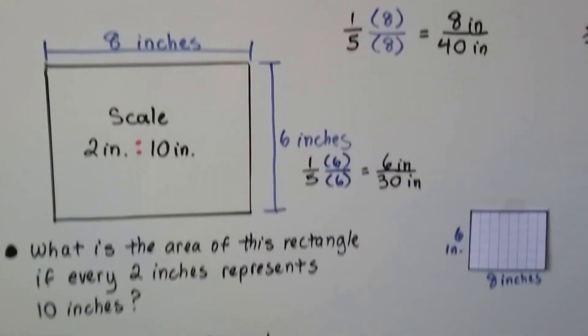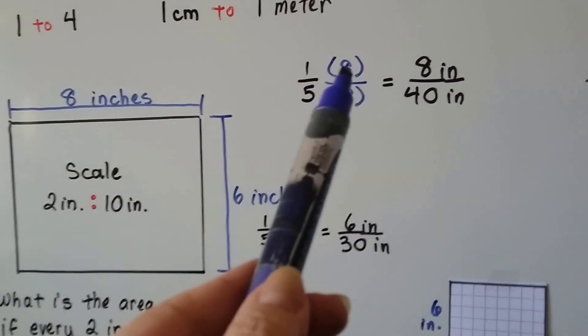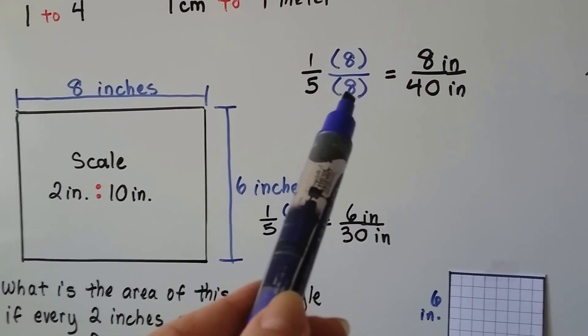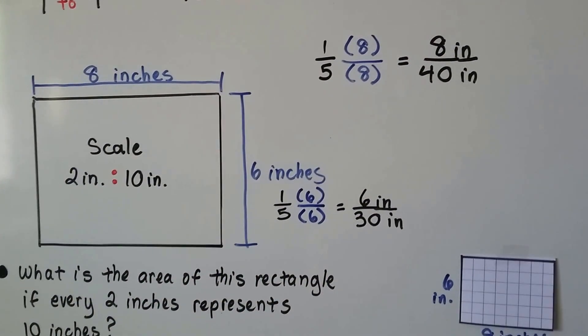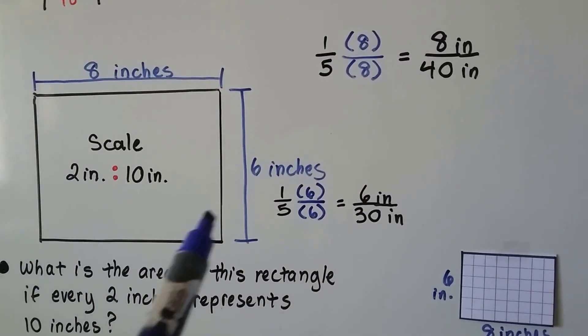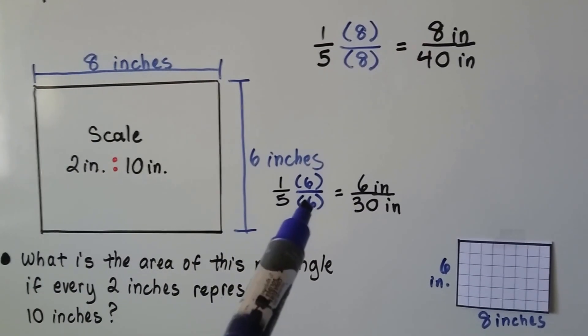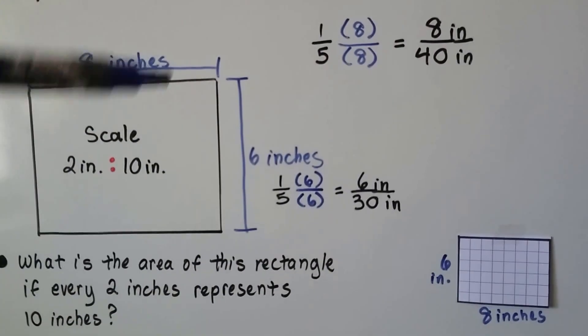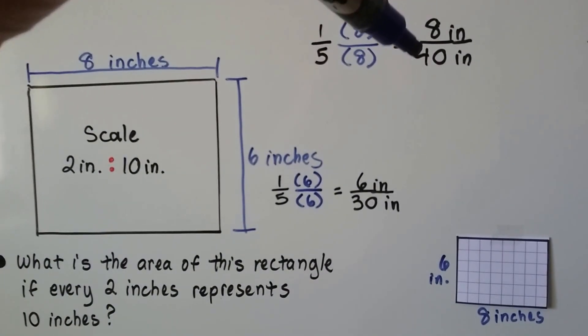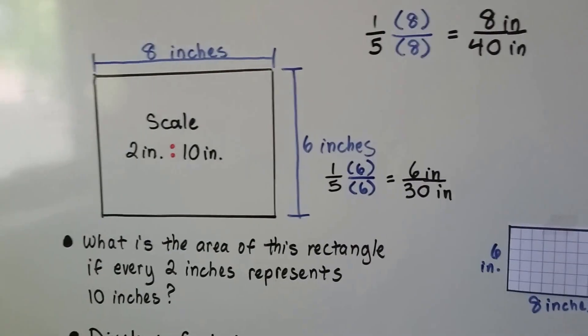And what we do is, we take that 1 fifth, that 1 to 5, and we multiply it, the numerator and denominator, by this 8 inches. And we get 8 inches over 40 inches. And we take the 1 fifth, and we multiply the numerator and denominator by that 6 for the 6 inches, and we get 6 over 30. That means the 8 inch side represents 40 inches, and the 6 inch side represents 30 inches.